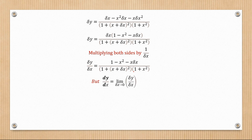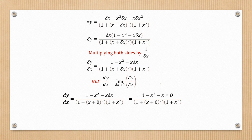To find dy/dx, it's safe to introduce zero for Δx since there's no risk of a zero remaining in the denominator. Setting Δx equal to zero: the denominator becomes (1 plus x squared) times (1 plus x squared) which is (1 plus x squared) squared. At the numerator, the x·Δx term becomes zero, leaving 1 minus x squared. Therefore dy/dx equals (1 minus x squared) over (1 plus x squared) squared.